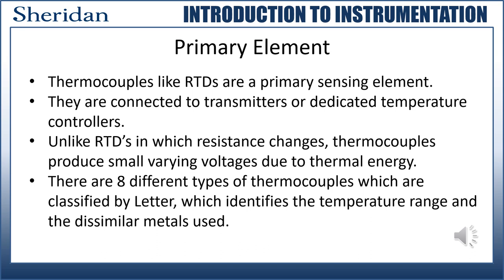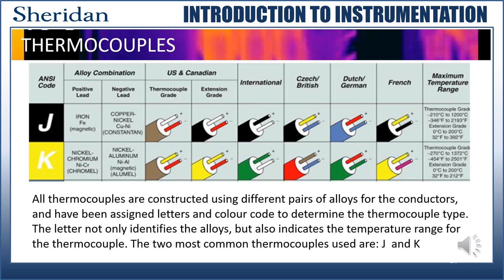There are eight different types of thermocouple classified by letter, which identifies the temperature range and the dissimilar metals used. By international standards, all thermocouples are constructed using different pairs of alloys for their conductors and have been assigned one of eight letters and color codes to determine the thermocouple type. The letter not only identifies the alloys, but also indicates the temperature range for the thermocouple. The two most common thermocouples used are J and K.